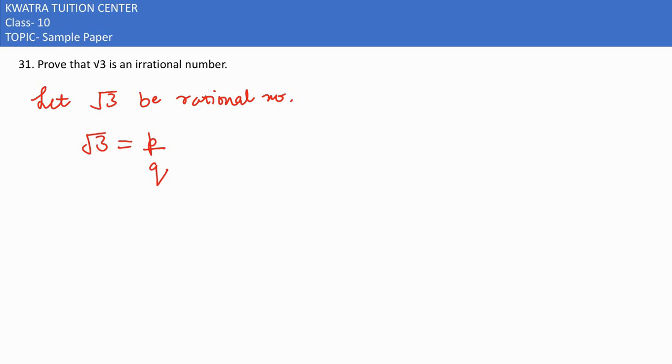We can write the rational number in which form? In the form of P/Q. And we know Q is not equal to 0, and P and Q are coprime numbers. They are coprime.